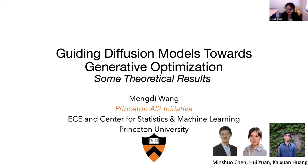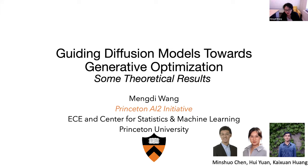Thank you so much. So it's my pleasure today to share some of my work on generative AI in connection to applied probability and optimization. The credits of this work belong to my wonderful team: Mingshuo Chen, Huiyuan, and Tai Xion Huang. Mingshuo in particular has accepted an offer to become a junior faculty at Northwestern University and has taken leadership in this project.